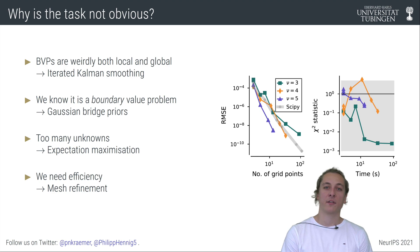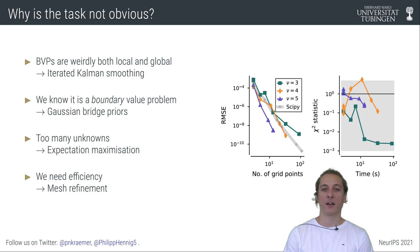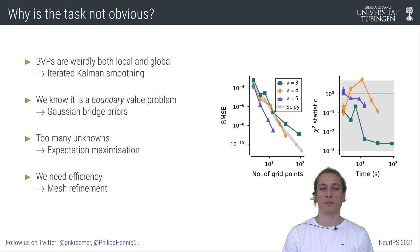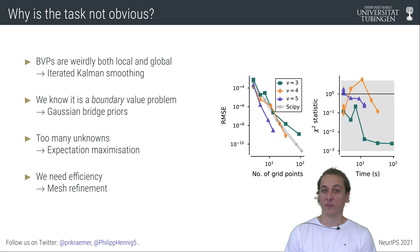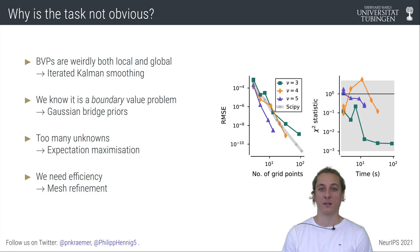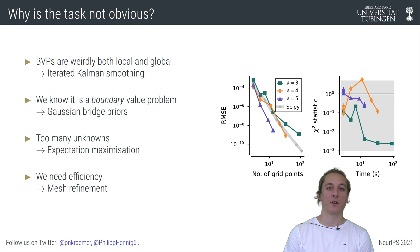Building on the iterated Kalman smoother while also adding some practical considerations like Gaussian bridge priors, hyperparameter calibration, and mesh refinement, we end up with an algorithm that converges quickly all while delivering calibrated uncertainty estimates. In the right plot here, if the curves are in the gray area, that is good.